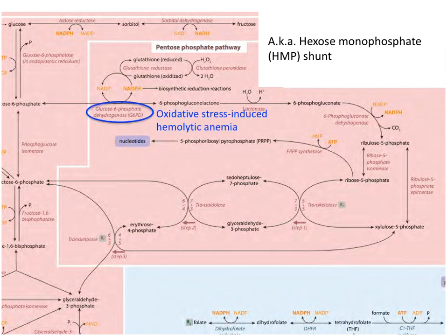A very common genetic deficiency in the red blood cell version of glucose 6-phosphate dehydrogenase, or G6PD, causes an oxidative stress-induced type of hemolytic anemia. So recall that this enzyme is required to make NADPH in red blood cells, and NADPH is required to keep glutathione in its reduced form. And glutathione is one of the key antioxidants that we have in cells to prevent reactive oxygen species damage.